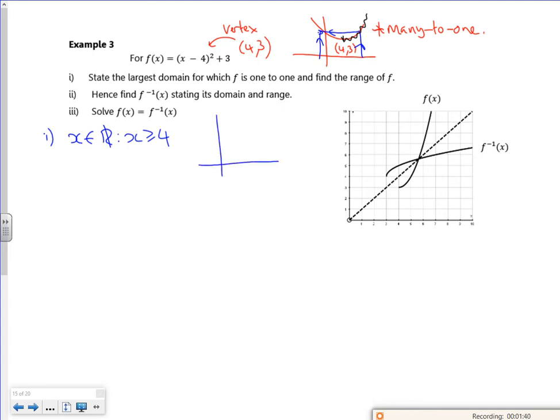So what I've got now is a graph starting at 4, 3 and going on forever. So then it says hence find the inverse. So step 1, y equals x minus 4 squared plus 3.